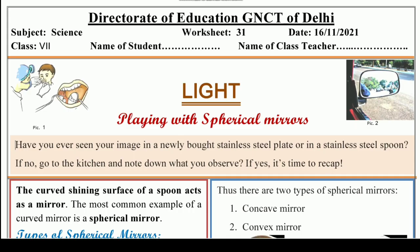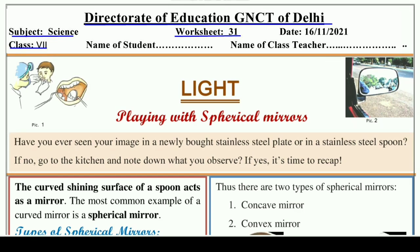Hello and welcome to Lavneesh Sarki class. This is Directorate of Education GNCT of Delhi's worksheet number 31, and it is only for class 7 students. It has been taken from the subject science. We will learn and understand the chapter Light in this worksheet and we will also discuss the topic Playing with Spherical Mirrors. So without wasting our time, let's start.